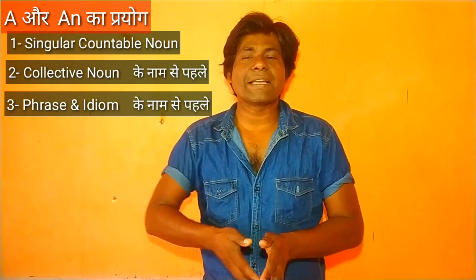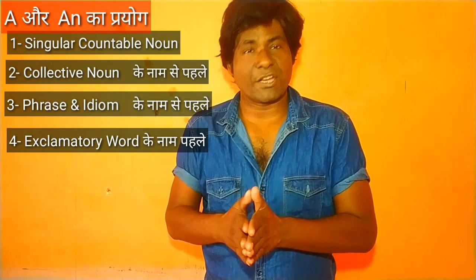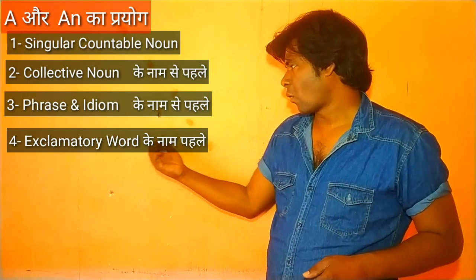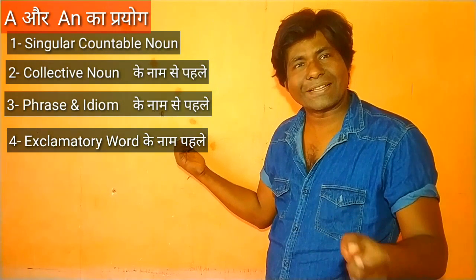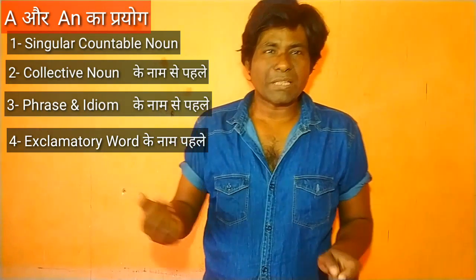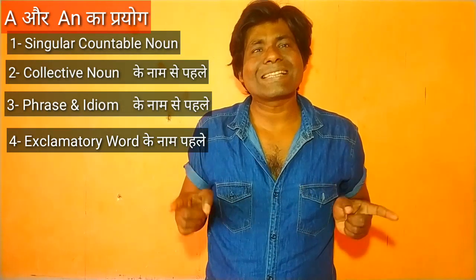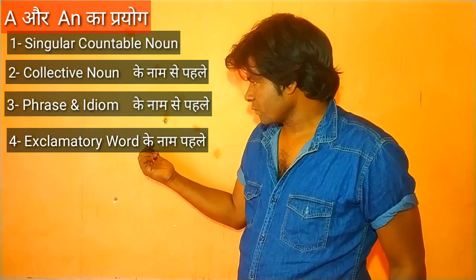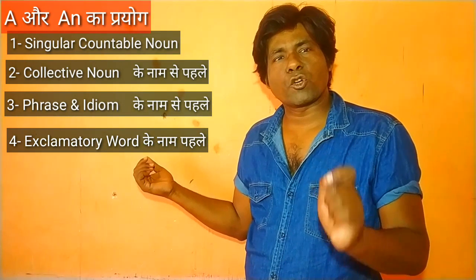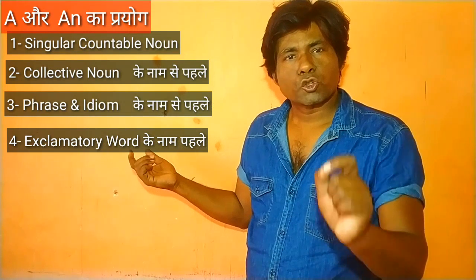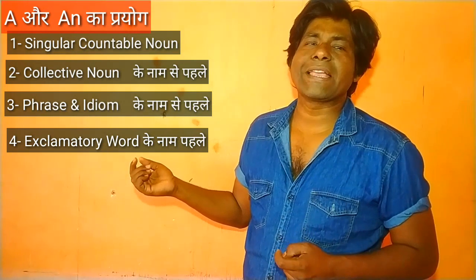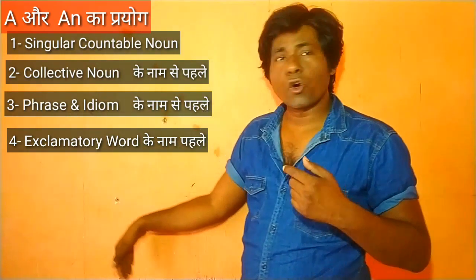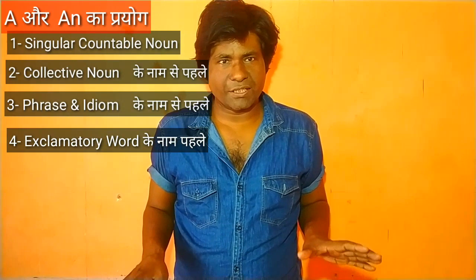Number 4 mein chalte hain — exclamation. Number 4 — exclamatory word. Matlab yeh ki ek sentence mein jab exclamatory word ka prayog hota hai, toh uske pehle bhi hum 'a' ya 'an' ka prayog karte hain. Ab sab ko ek-ek line se samajhte hain.